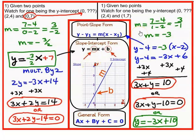Very similar problem now, but we're going to find the slope again using the two ordered pairs. But we don't have the y-intercept, so we're going to have to go with the point slope formula.